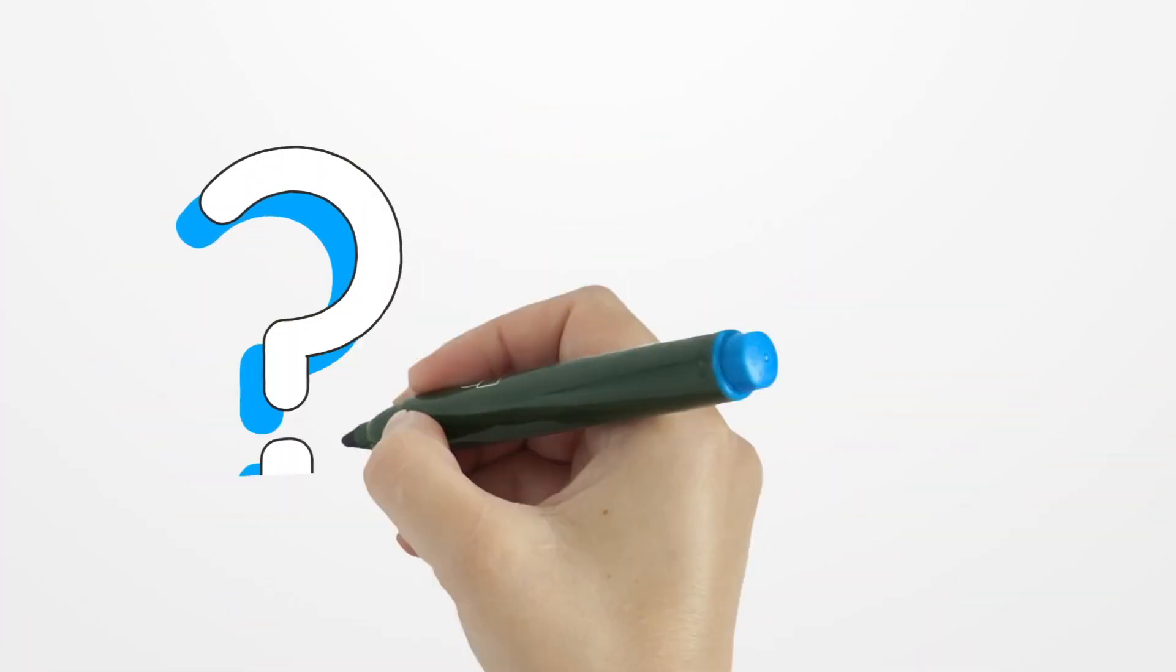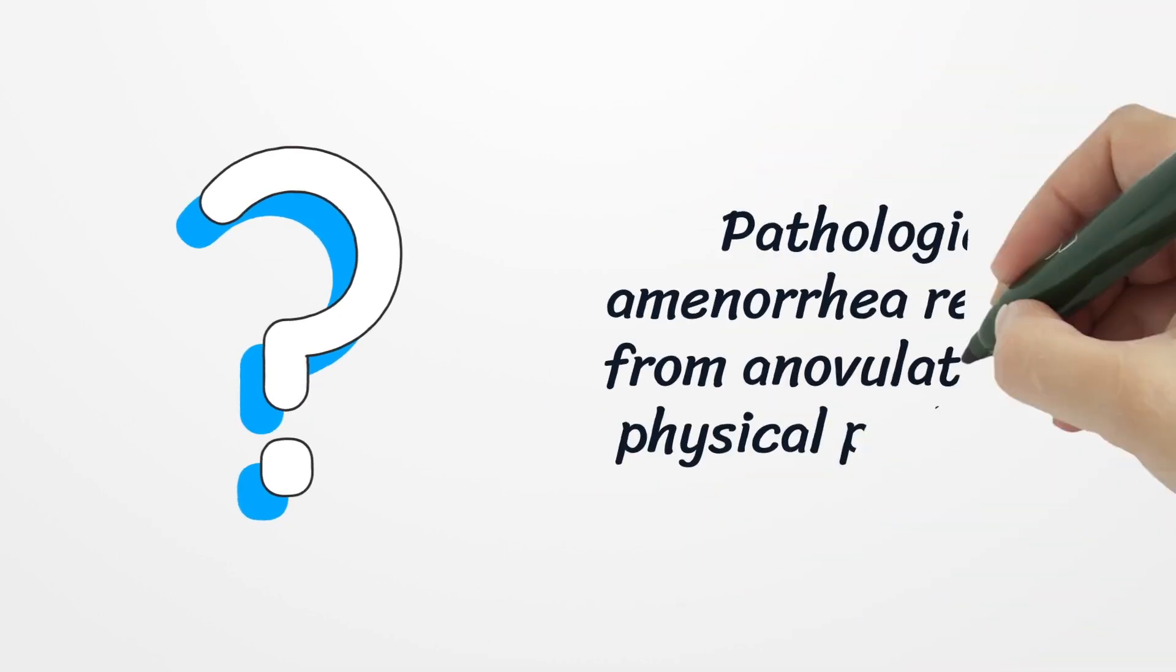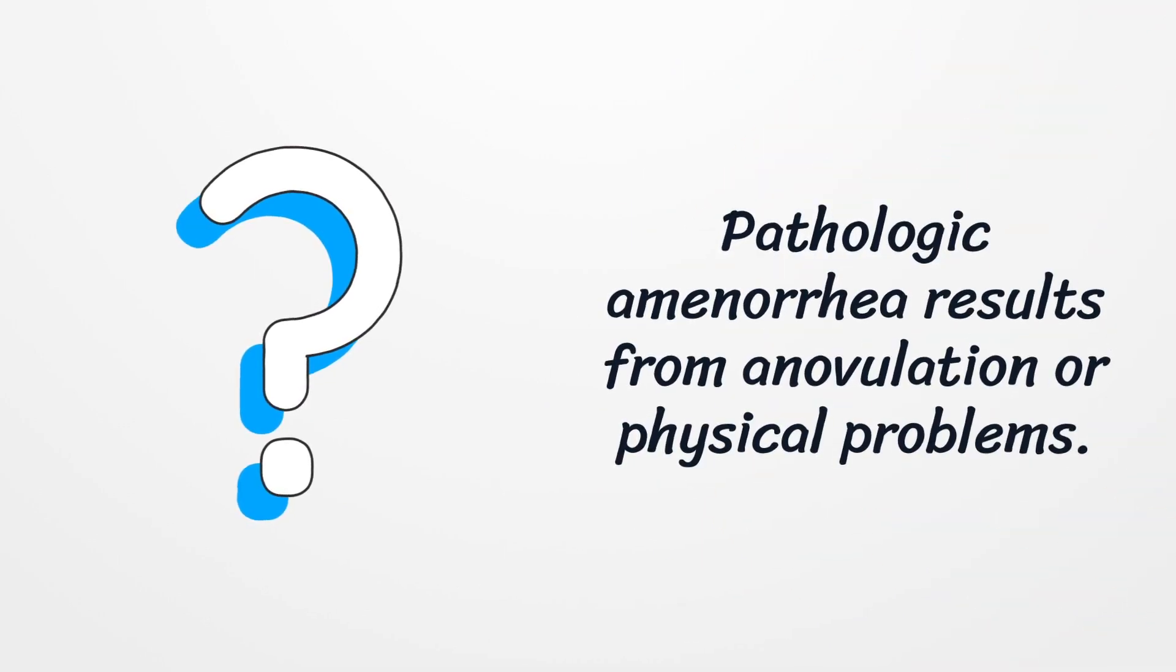Pathologic amenorrhea results from anovulation or physical obstruction to menstrual outflow, such as from an imperforate hymen, cervical stenosis, or intrauterine adhesions. Actually, anovulation itself may result from hormonal imbalance, debilitating disease, stress, emotional disturbances, or strenuous exercise.